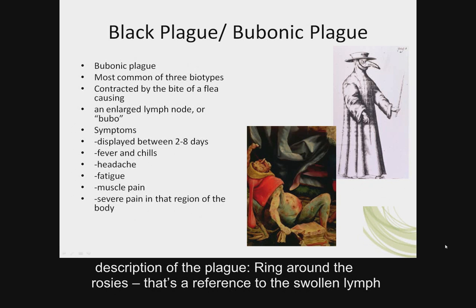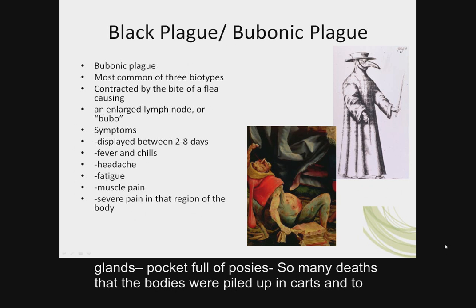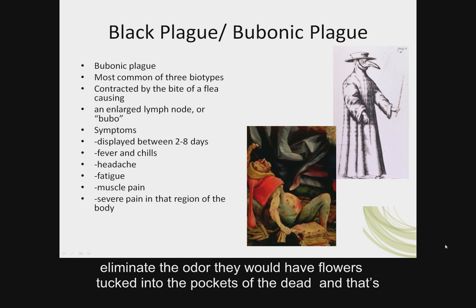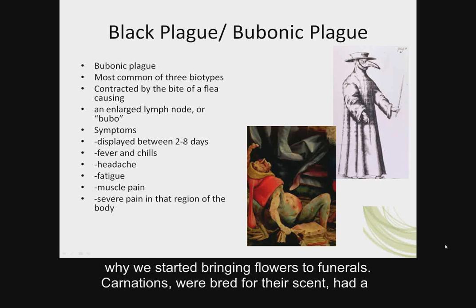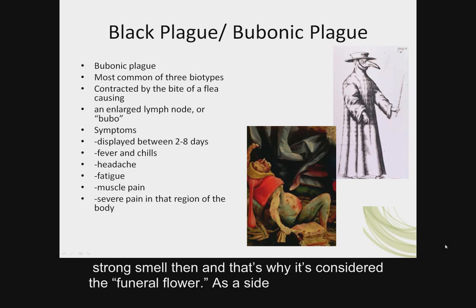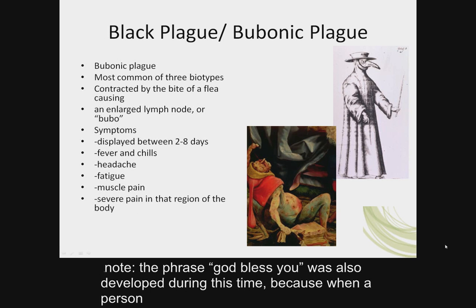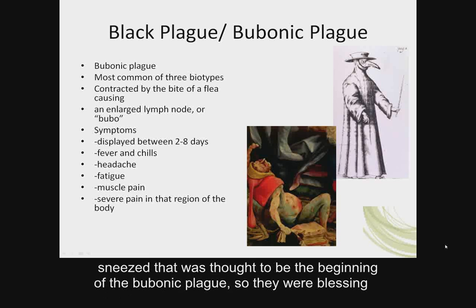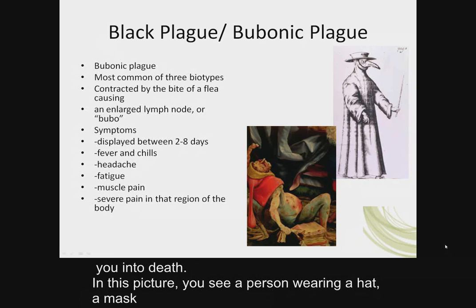Nursery rhymes involved descriptions of the plague. 'Ring around the rosies' is a reference to the swollen lymph glands. 'Pocket full of posies' — so many deaths that bodies were piled up in carts, and to eliminate the odor they would have flowers tucked into the pockets of the dead. That's why we started bringing flowers to funerals, and why carnations — bred for their strong scent — are considered the funeral flower. The phrase 'God bless you' was developed during this time because when a person sneezed, that was thought to be the beginning of the bubonic plague — so they were blessing you into death.